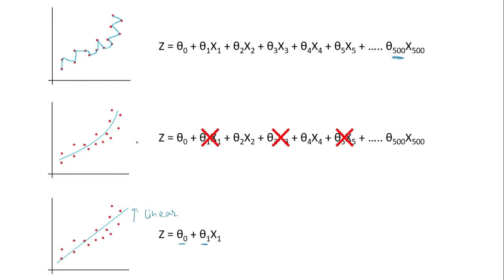What we want is a middle ground between these two curves so that we can have a proper curve that fits well. This is possible by eliminating or nullifying the effect of certain parameters or certain terms in the curve so that we can have a better, smoother curve. This technique to nullify the effect of certain parameters or neurons in a neural network is called regularization.